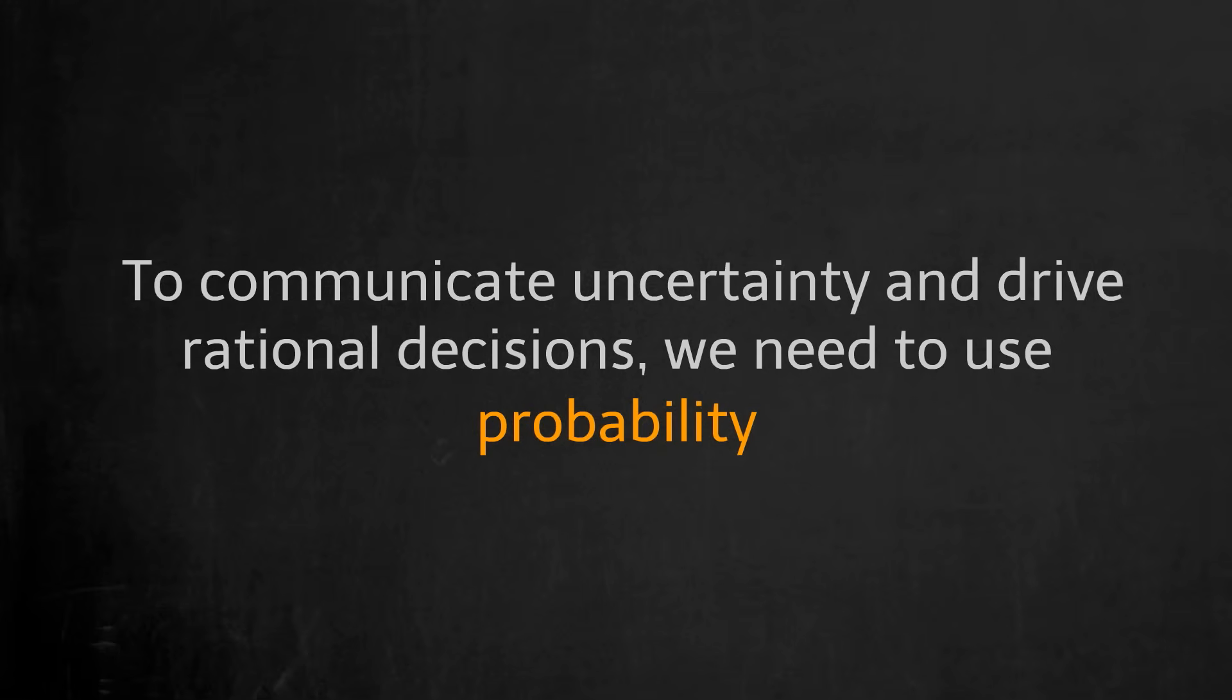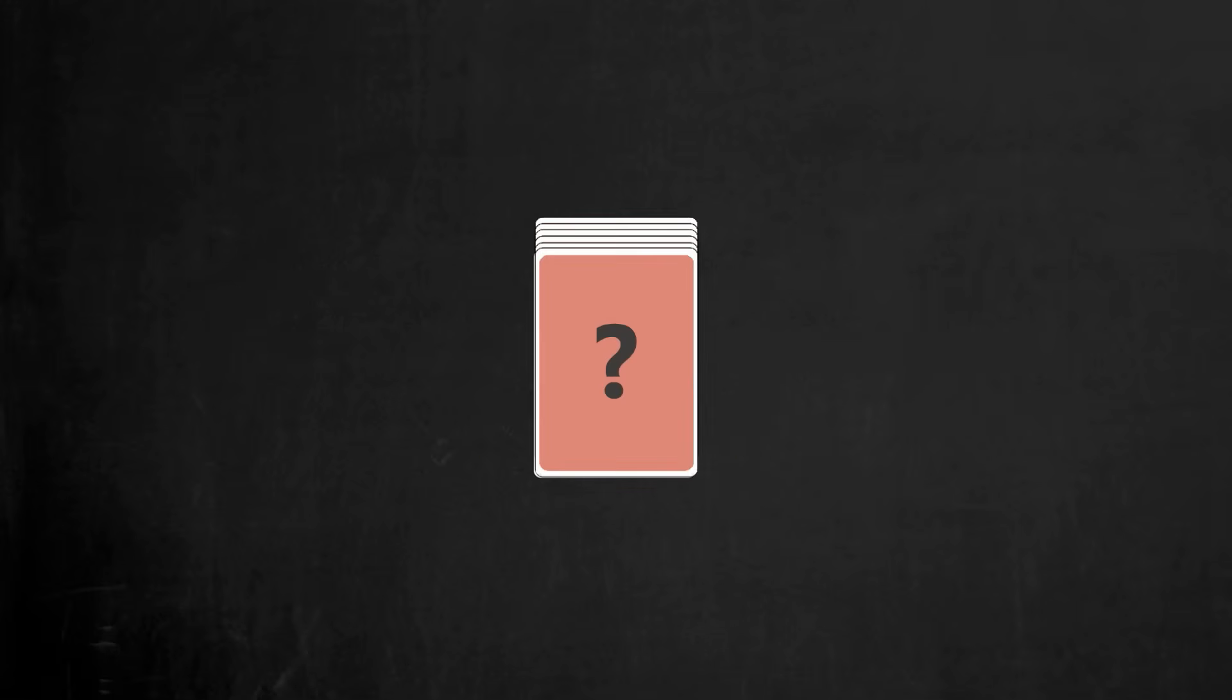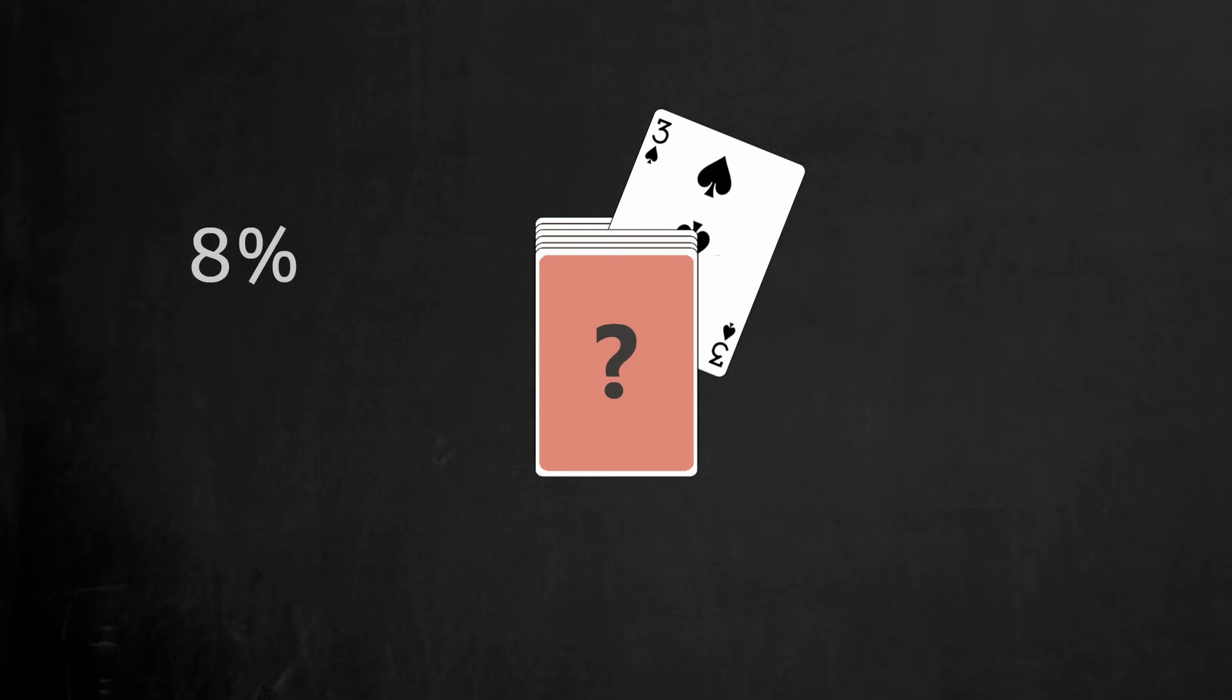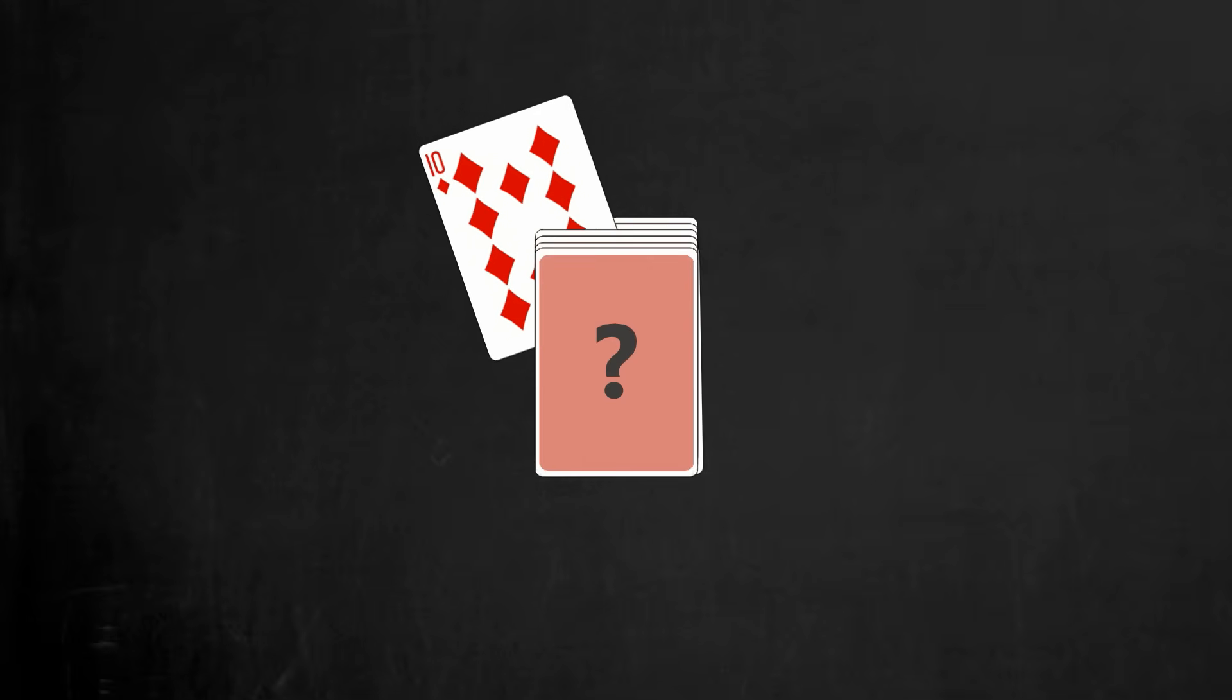What is probability? Probability is an expression of the chance of something happening. For example, if you randomly draw a card from a regular 52-card deck, the probability of getting a 3 is 1 in 13, or approximately 8% chance. The probability of getting a card that is a diamond is 1 in 4, or 25% chance.